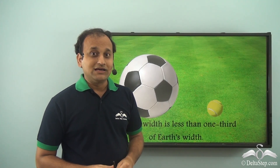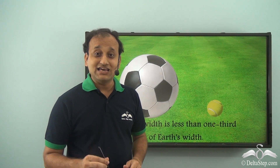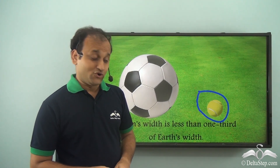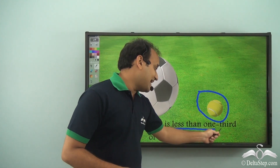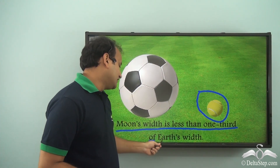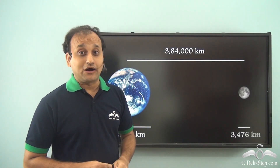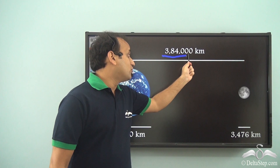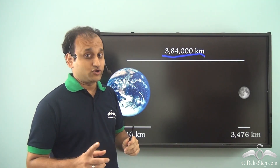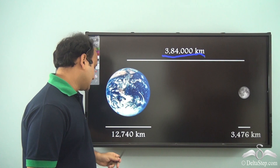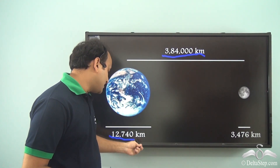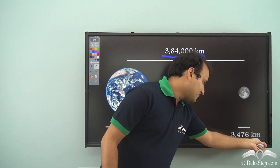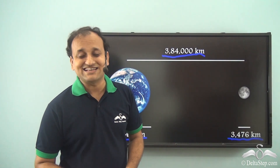If we compare the size of the Earth to a football, then the size of the Moon will be somewhat equal to a tennis ball. Moon's width is less than one-third of Earth's width. The distance between Earth and Moon is 384,000 kilometers. Earth's width is 12,740 kilometers, while Moon's width is 3,476 kilometers.